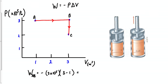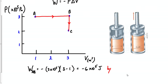Delta V just means final minus initial, so in this case my final volume is 3, making it 3 minus 1 for the volumes in this problem. This comes out to negative 6 times 10 to the 5 joules, meaning work was done by the gas. If you get a negative answer, the cylinder expanded and lost energy — work was done by the gas. If the work comes out positive, somebody compressed the cylinder, so work was done on the gas. That would be work A to B.